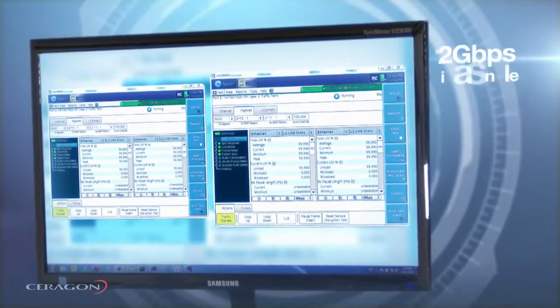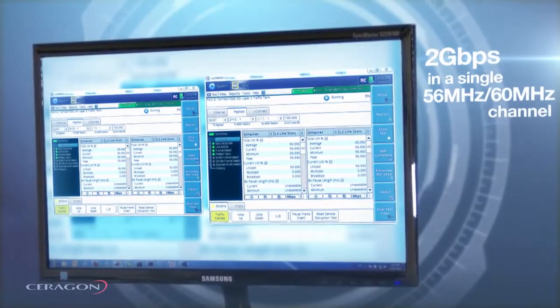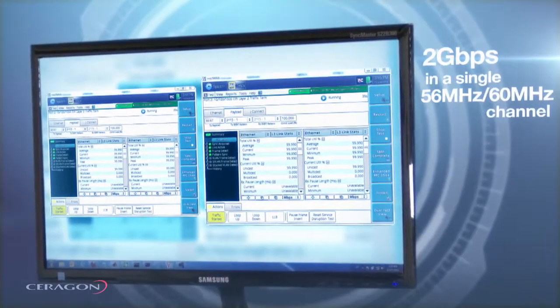Now we are going to use the same setup and demonstrate a 2 gigabit per second throughput using 56 or 60 MHz channel.